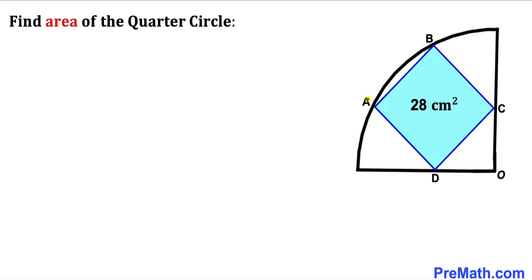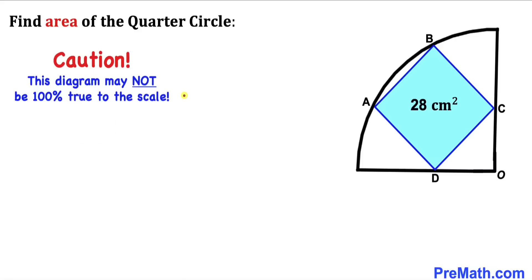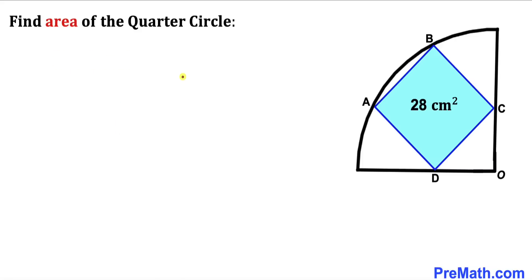Welcome to PreMath. In this video we have a square ABCD embedded inside a quarter circle, such that the area of the blue square ABCD is 28 cm². We are going to calculate the area of this quarter circle. Note that this figure may not be 100% true to scale. Let's get started with the solution.